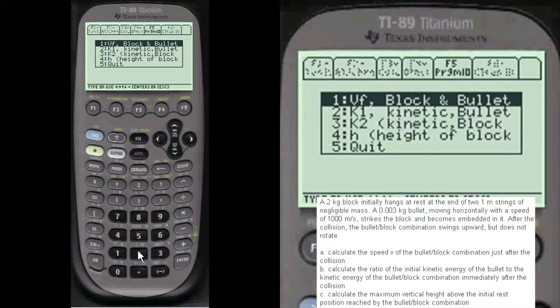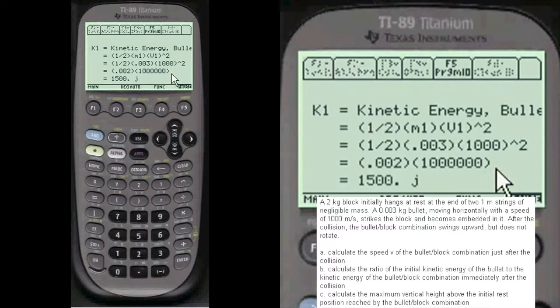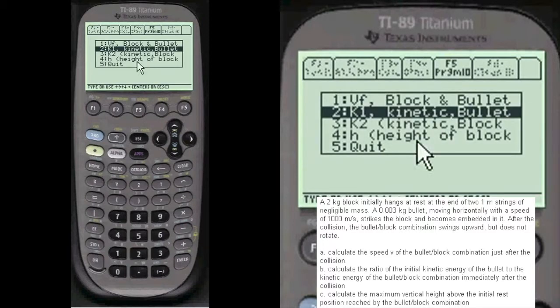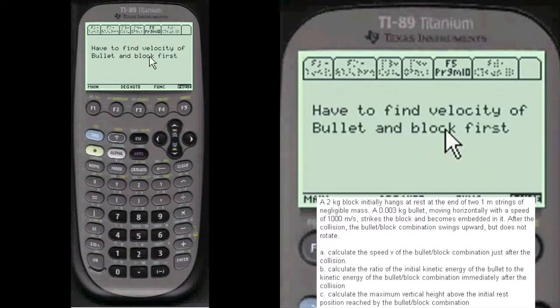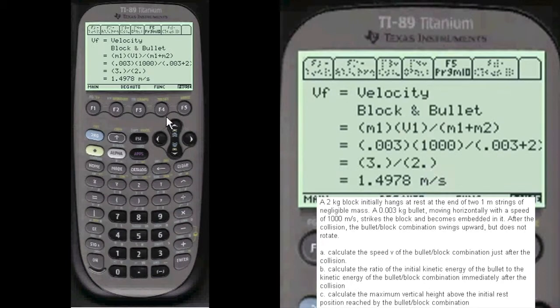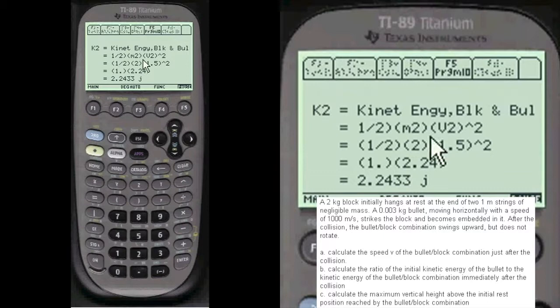Kinetic energy. Number 2 is the initial kinetic energy of the bullet, which is 1,500 joules. Number 3 is the kinetic energy of the block. But we have to find the velocity of the block first. So we do that.